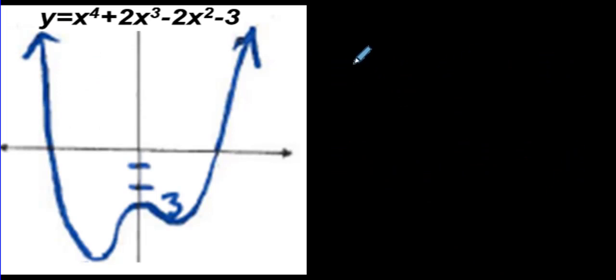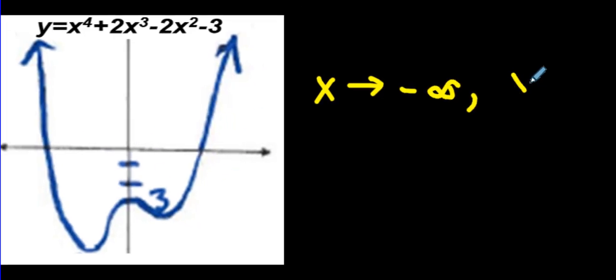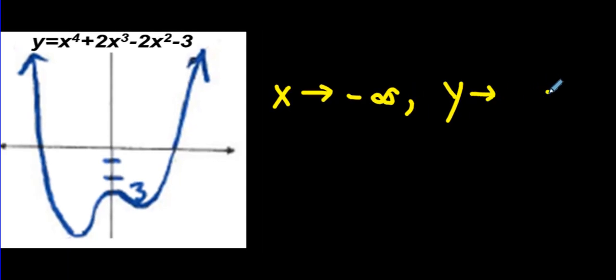Here's another question. We're starting to fly through these now. See how easy these are getting? As x approaches negative infinity, as we go forever left, y approaches positive infinity. It goes up forever. As x approaches infinity, y approaches also positive infinity. It goes up forever. No matter if you're going left or right, y is going up.